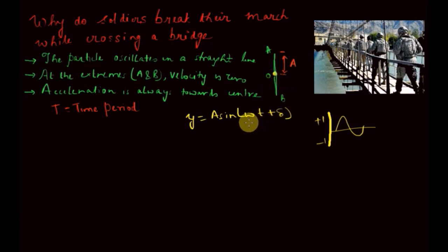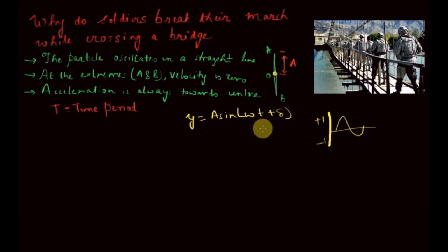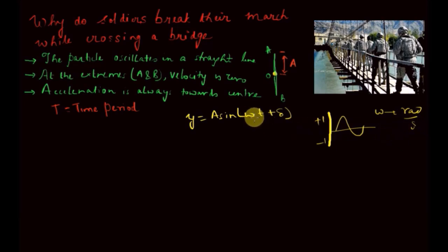Now let's understand why we have chosen ωt + δ. We want to represent the motion of the particle as a function of time, but sine is defined for an angle while time has units of seconds. So we introduce the term ω, which has units of radians per second, making ωt dimensionless in radians. We include δ because the particle may not start from the origin — δ represents the initial position of the particle.